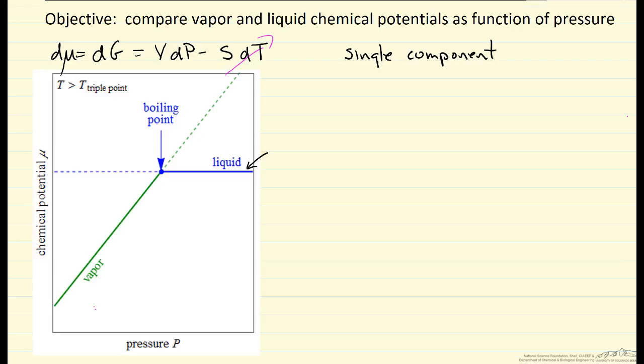And you'll notice on this plot that it says the temperature is greater than the triple point temperature. Let's just look at a pressure-temperature diagram to understand why that is.